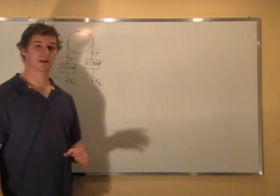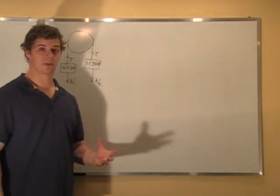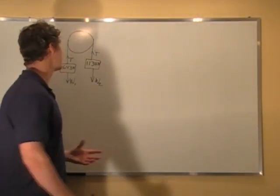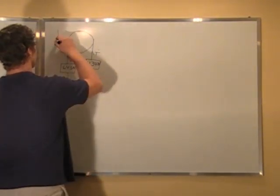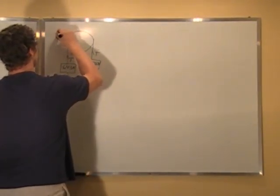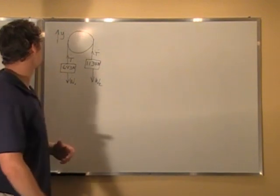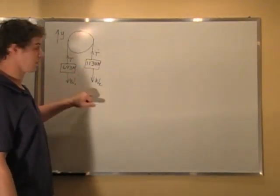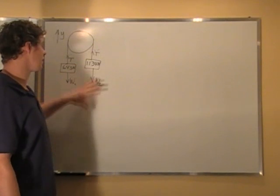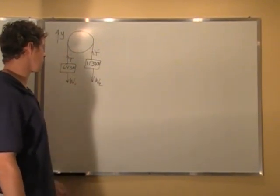And the key thing we have to know here is that they are going to have different accelerations. So now if we just define why up is positive and we know just by looking at this we know this one is going to go down. So we will just assume that this is going in the down direction and this is going in the up direction.